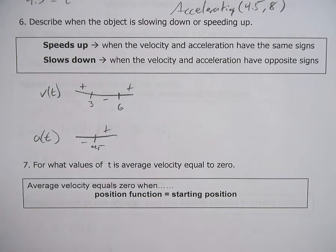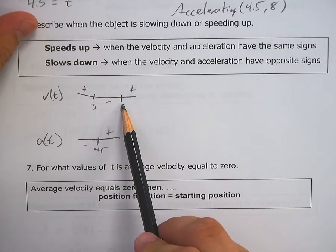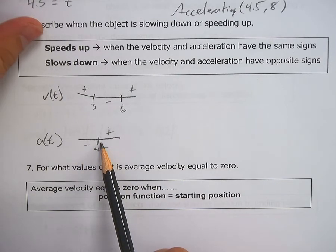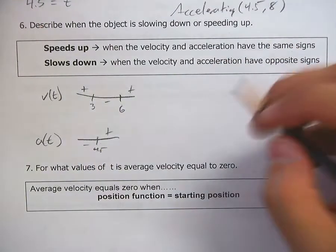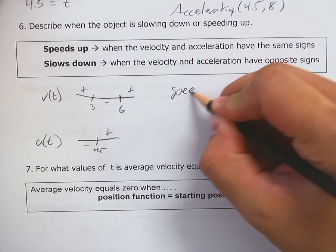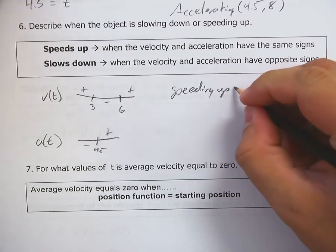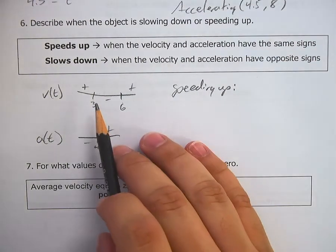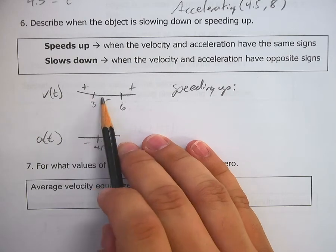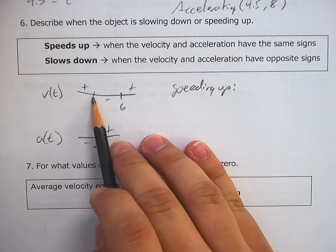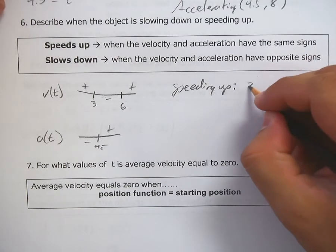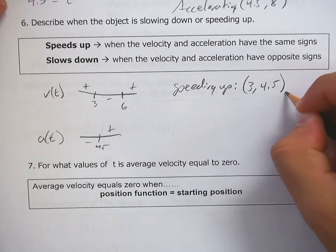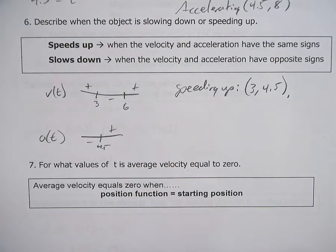So where do they have the same signs? Let's do negatives first. Velocity is negative between three and six. And acceleration is negative between zero and 4.5. So that means that it is speeding up. And it's going to happen between three and 4.5. Because that's where both of them are negative. From here to here, they're both negative. So it's three to 4.5.